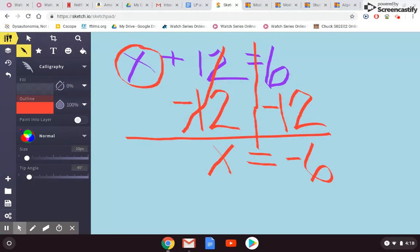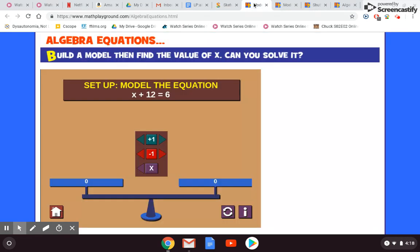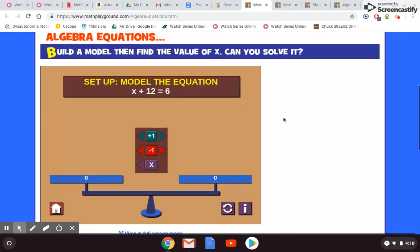There's a couple different ways to check your answer. You can put it back into the equation as your mystery number x. And we also have this way to model our equations.